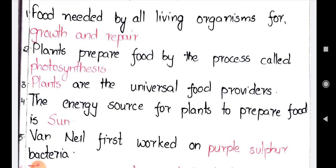Going to the fourth bit: the energy source for plants to prepare food is the sun. Where do the plants get the energy from? They get energy from the main source, which is the sun. If the sun does not give light energy, they can't prepare the food material. The sun is the main energy source for plants to prepare food material.